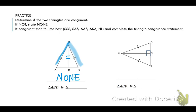Now in my second set of triangles here, I again have right triangles because of the marking. I've also been given that the hypotenuses — the side opposite the right angle — are also congruent. And I know that BD equals itself because of the reflexive property, and that's a leg. So on this set of triangles, I could prove they're congruent using hypotenuse leg — triangle ABD is congruent to triangle CBD.